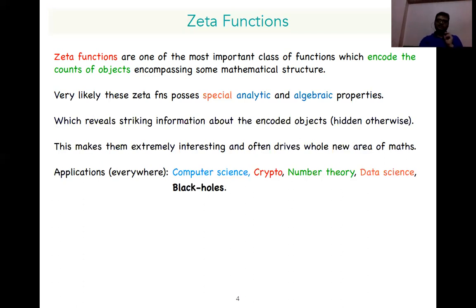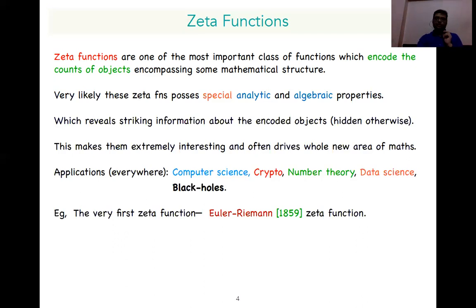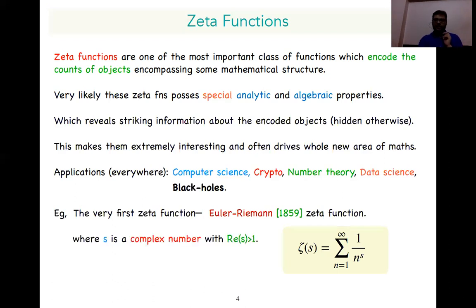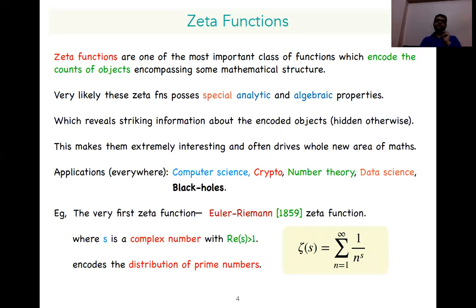An example that comes to mind is probably the very first zeta function, called the Euler-Riemann zeta function, or also the Riemann zeta function. It is a summation of the inverse of the powers of natural numbers, where s is a complex number and the real part of s is greater than 1 for this function to converge. Euler defined this zeta function and studied it for real s, but Riemann extended the definition to complex numbers and revealed that this zeta function encodes the distribution of prime numbers among natural numbers. The famous Riemann hypothesis is associated with the roots of this zeta function.